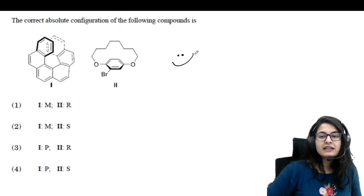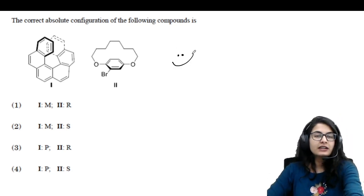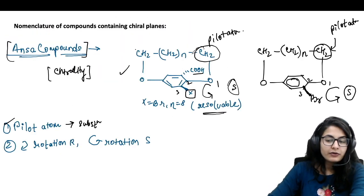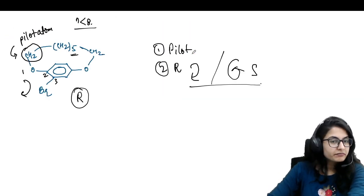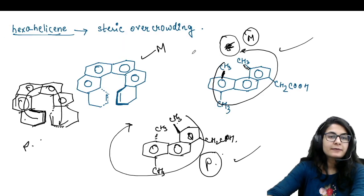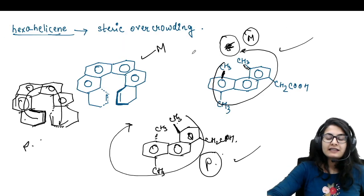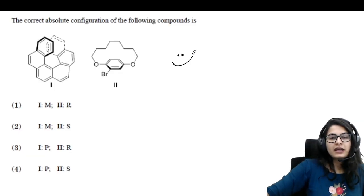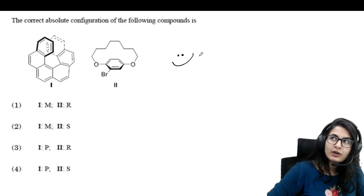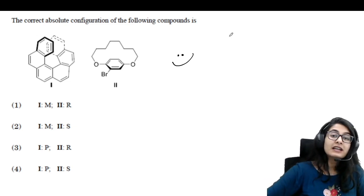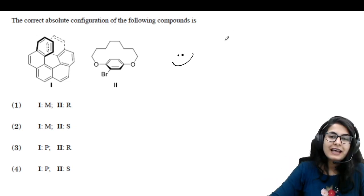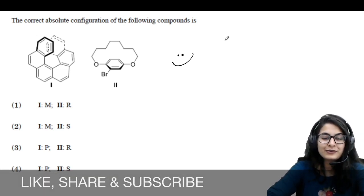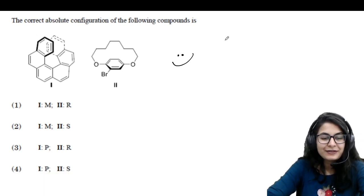So yes, more such videos are going to come up. Today we talked about the nomenclature of ansa compounds, paracyclophanes, hexahelicene, and other sterically overcrowded molecules. I will see you all in the next video in this short tricks series — like, share, and subscribe, and watch all the videos. Bye, see you soon!